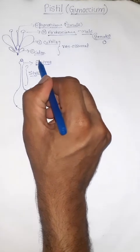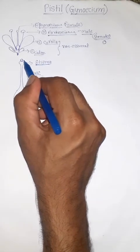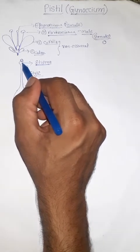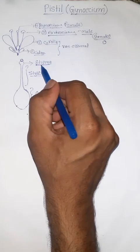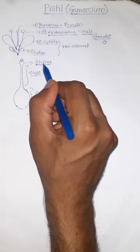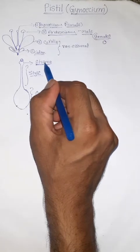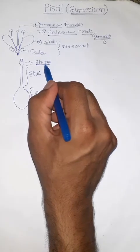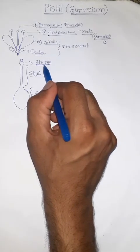So the stigma first captures the pollen grain and then allows germination of pollen grains. It also has specificity — the secreted materials are useful only for the specific, required pollen grains. That is one more characteristic feature of Stigma.